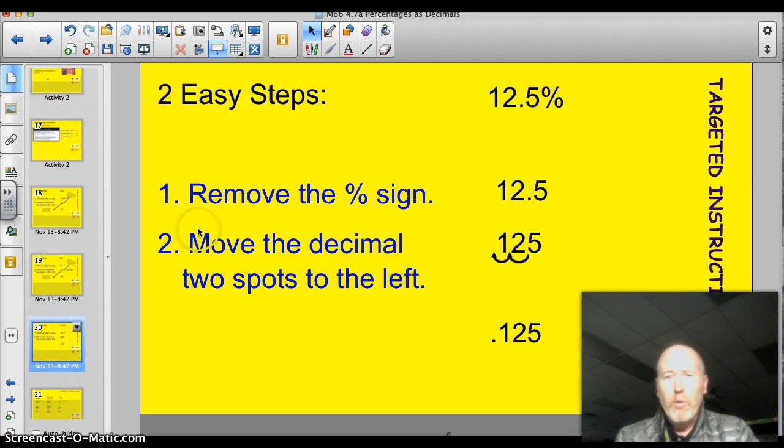Alright, one more example before I have you try some on your own. 12.5%. Now, this is a little quirky too, because we've got a decimal and a percent sign. Same thing. Step one, remove the percent sign. Now, you just have 12.5. Step two, move the decimal two spots to the left. Look at your answer, .125.